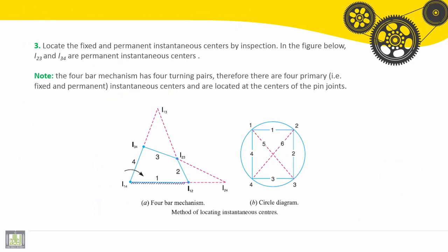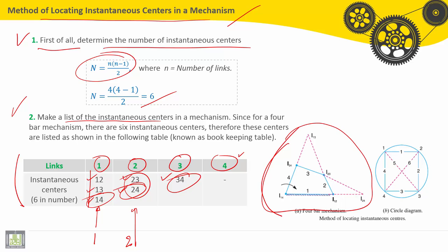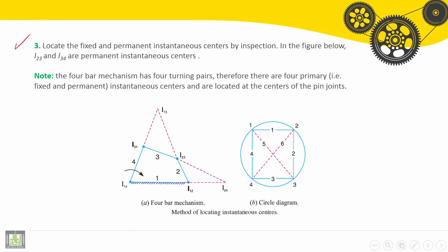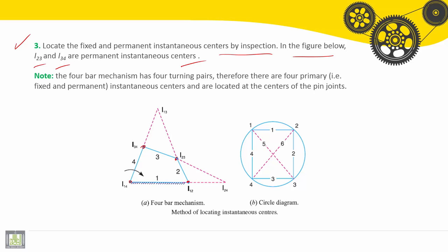This is the location on this figure of all these instantaneous centers of rotation. Third point: locate the fixed and permanent instantaneous centers by inspection. In the figure below, i(2,3) and i(3,4) are permanent instantaneous centers. So i(1,4), i(1,2), i(3,4), and i(2,3) are the primary instantaneous centers of rotation.